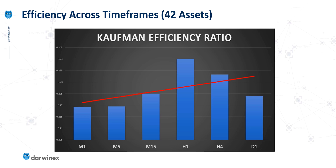The results seem to contradict the generalization that noise simply increases as you go down the time frames — that doesn't appear to be the case. Higher values represent high efficiency and low noise, while low values mean low efficiency and high noise. Looking at the first four time frames — the 1-minute, 5-minute, 15-minute, and 1-hour charts — the generalization that noise decreases as the time frame increases does seem to hold. But look at what happens for the 4-hour and daily time frames: noise appears to increase.